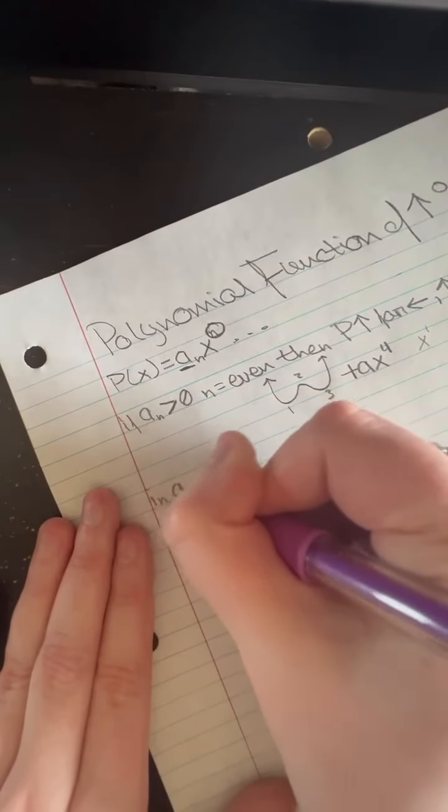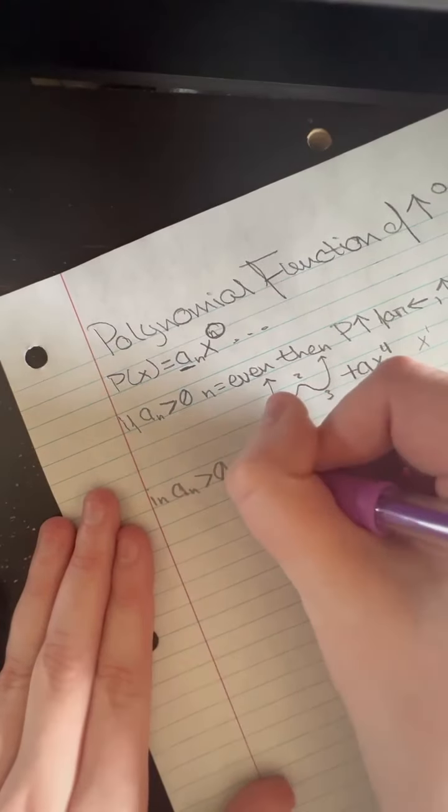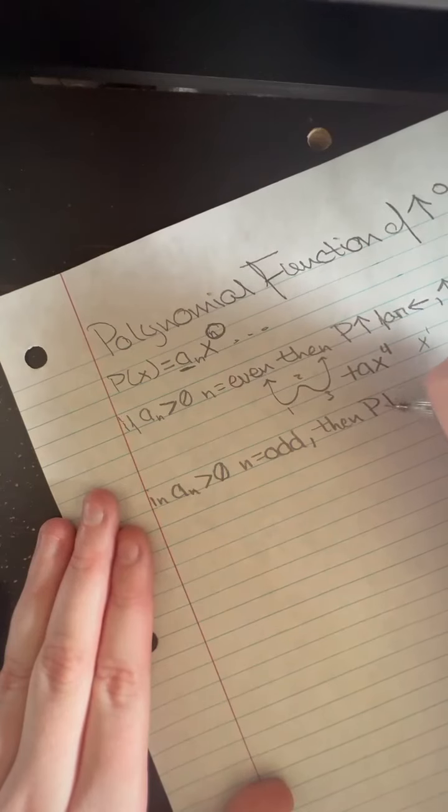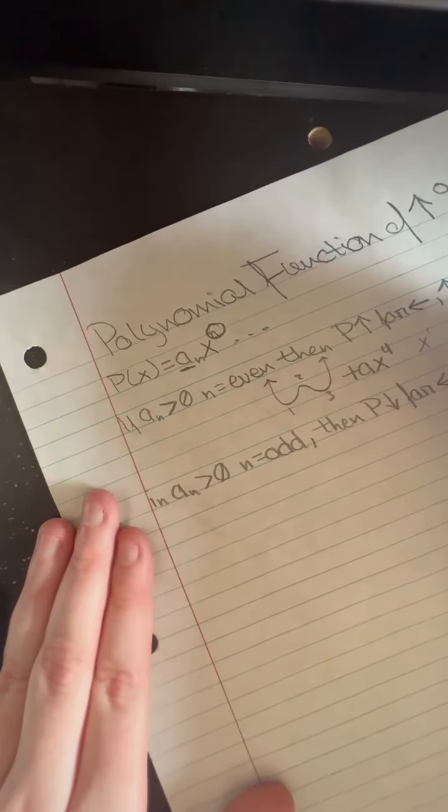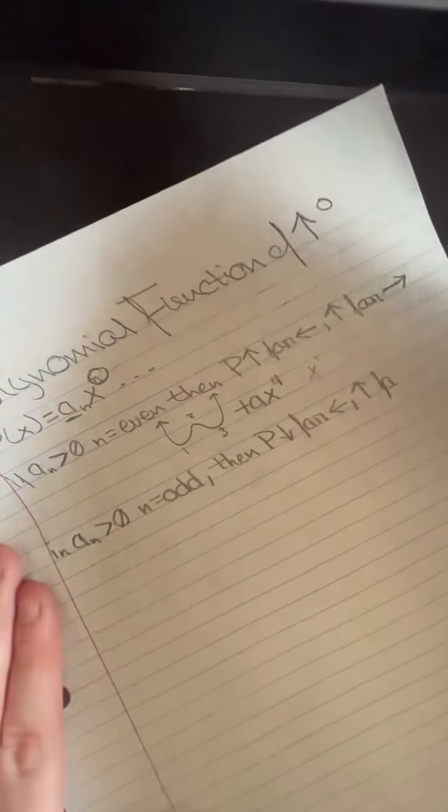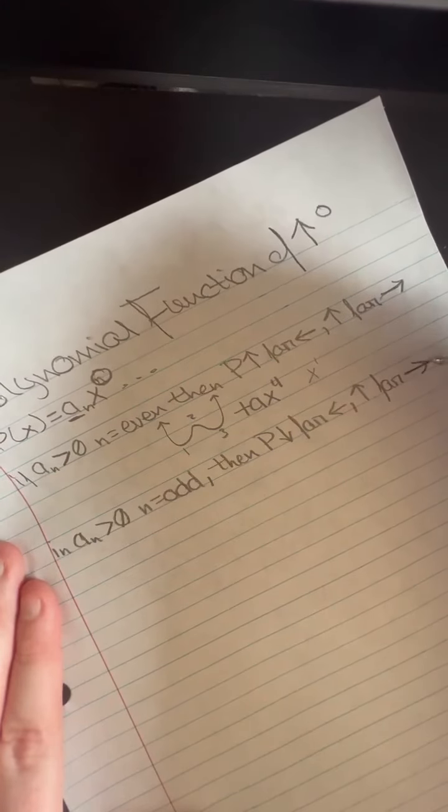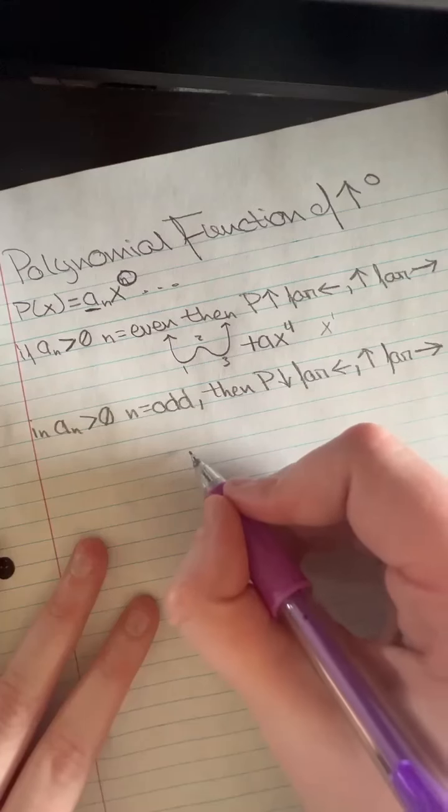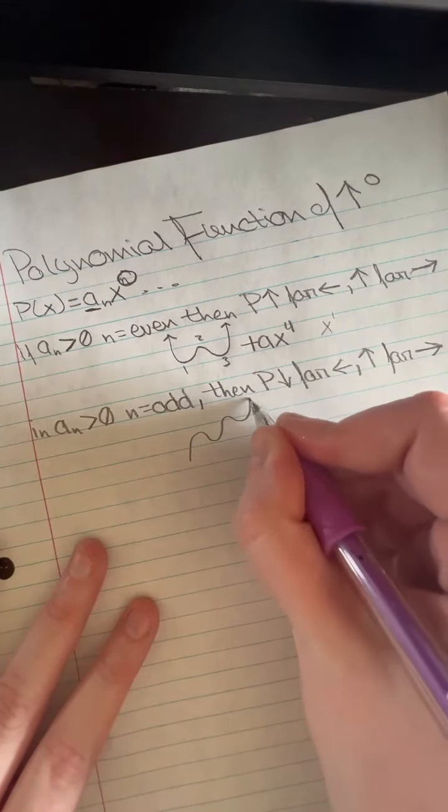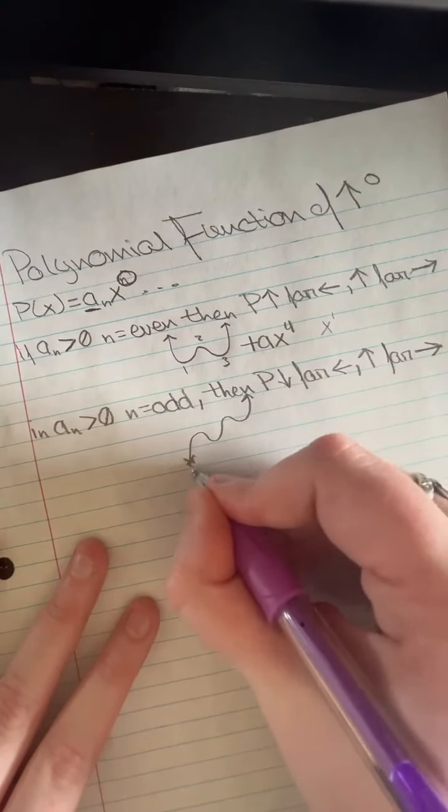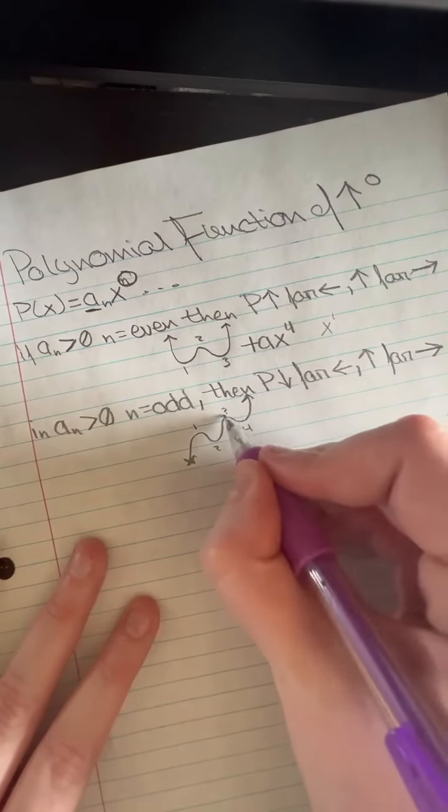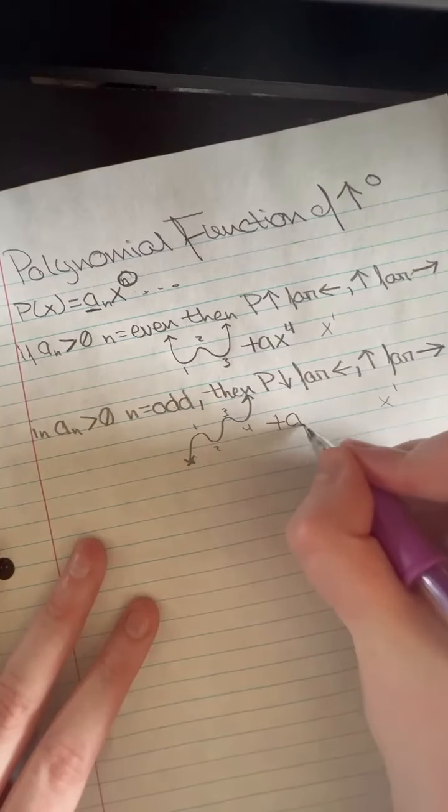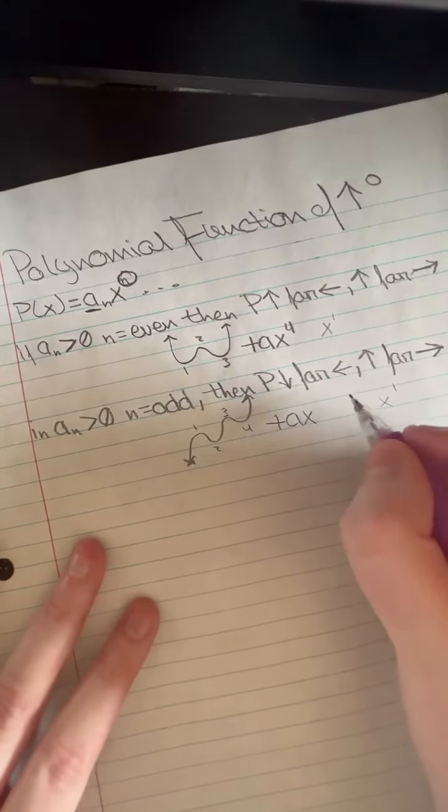If a is still greater than 0, but n is an odd number, then p will go down to the far left and up to the far right. I'm trying to record this the best that I can, I'm sorry if it's not perfect. So that would look something like this. We have 1, 2, 3, 4 turns, exponent of 1. When our exponent here is odd, it would be a positive a since a is greater than 0, and our x exponent would be 5.